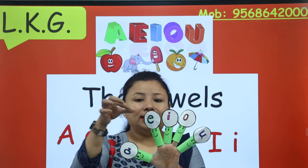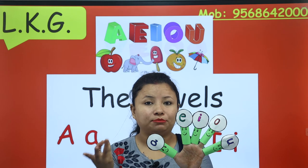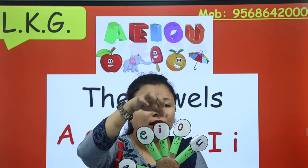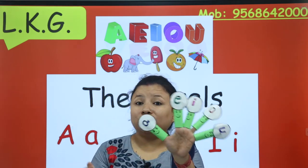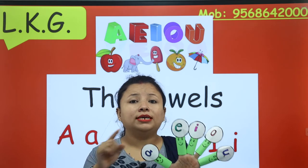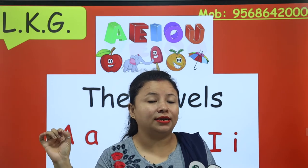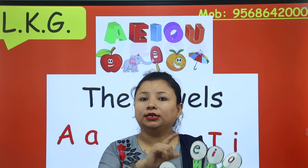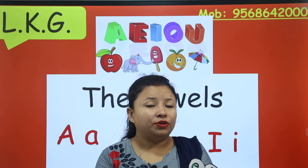A, E, I, O, U. A, E, I, O, U. Again, three times: A, E, I, O, U. A, E, I, O, U. A, E, I, O, U. A short vowel that we use — a vowel is in every word that we read or we write. Without a vowel, there is no word.